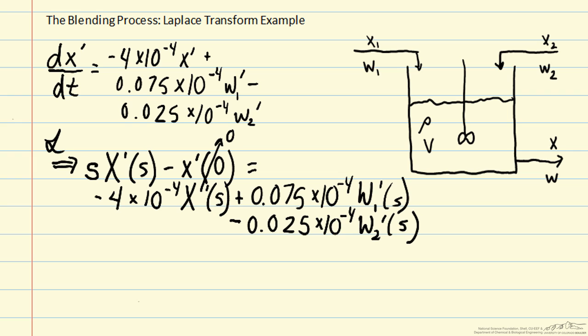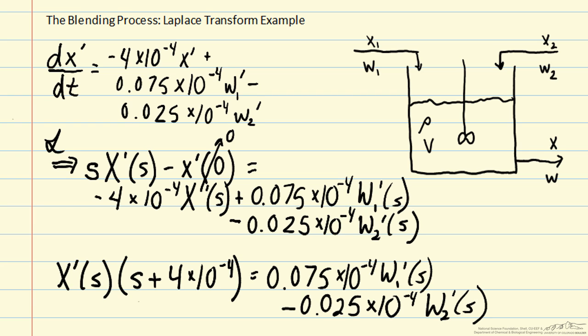And now that we have taken the Laplace transform of each of our terms on the left and right side of the differential equation, we can combine terms for our unknown to algebraically solve for the mass fraction in the tank. So now we have a general expression where we can solve for x' of s as a function of our two inlet streams.